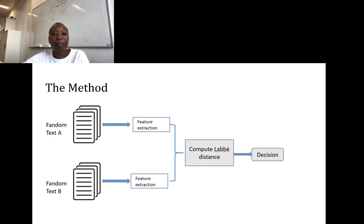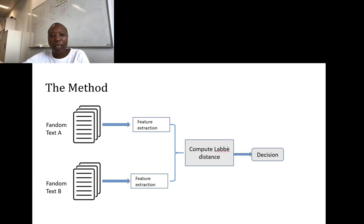The approach is to extract features from each of the text bodies to create a text vector. This text vector is then used to compare the similarities in the writing styles. The similarity computed will then allow us to arrive at a decision if the text was written by the same author or if there were two authors.